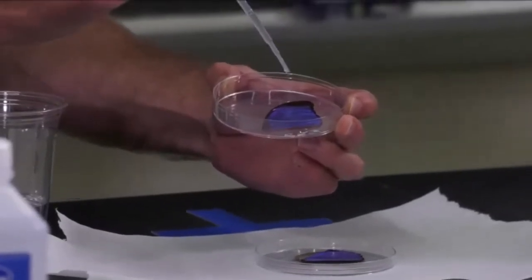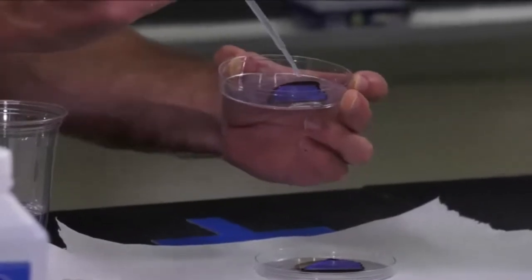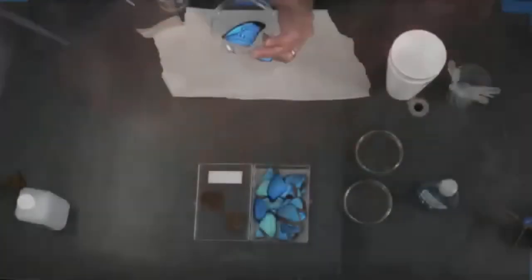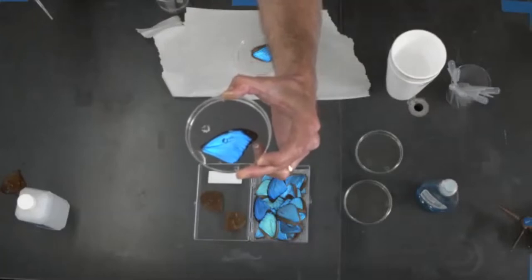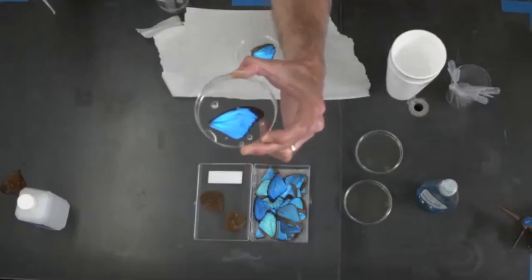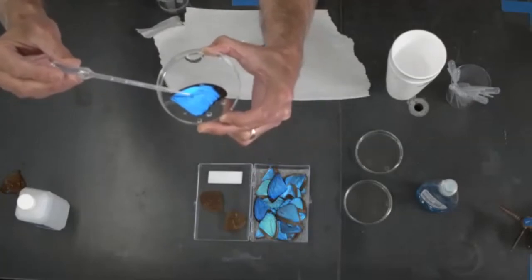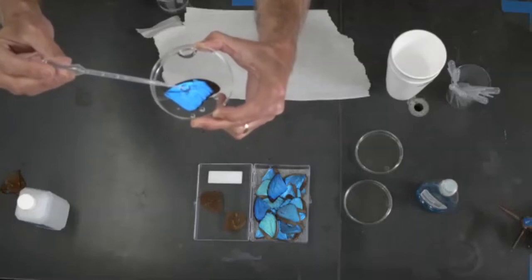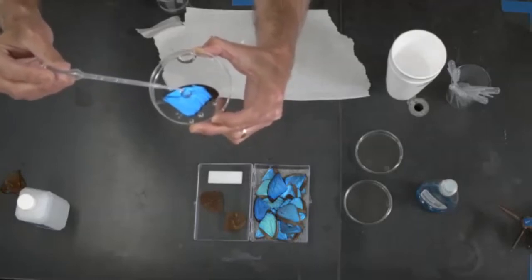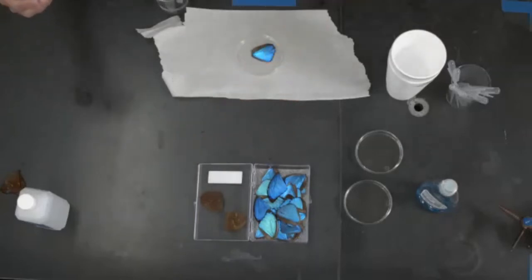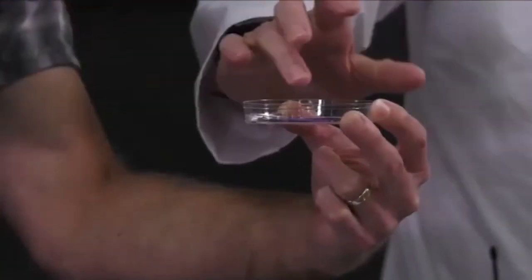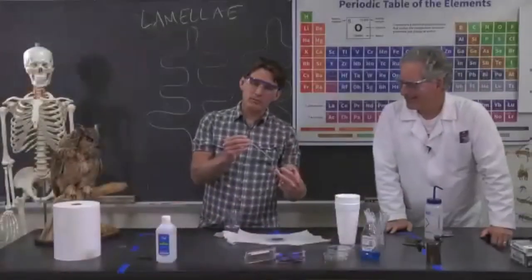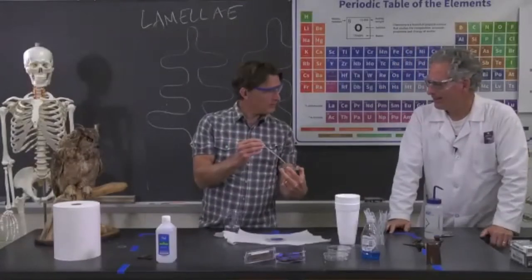I'll hold it up to the overhead cam. See how it beads up on the surface? It just kind of rolls around. It does not get absorbed by the wing. That's really remarkable. Look at that, I've got a huge bead of water. It just won't get absorbed by the wing. So that wing should be dry when you touch it, and it is.